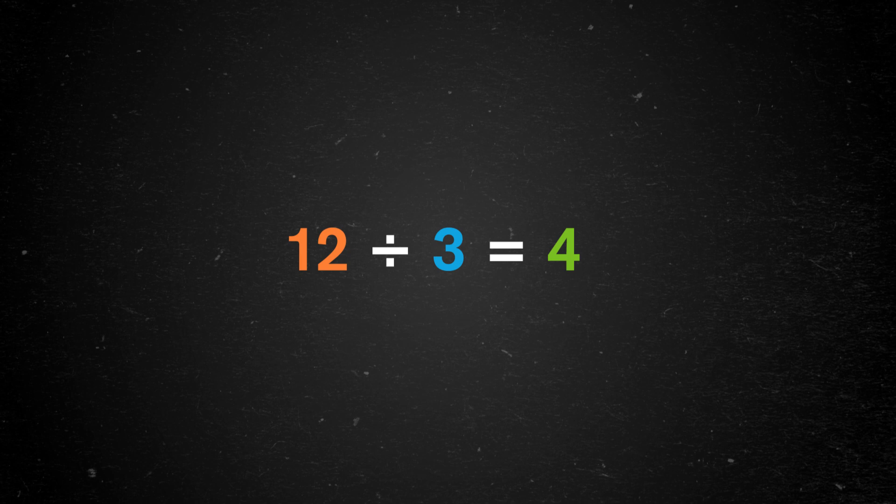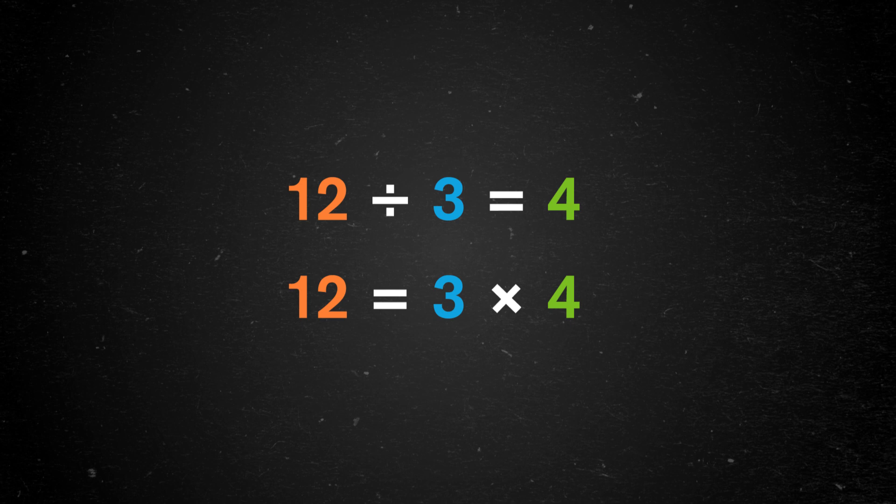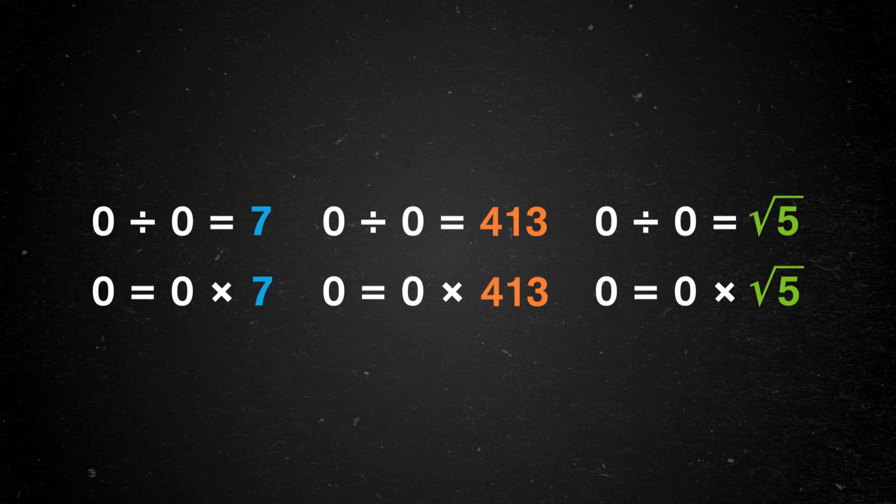Now we know 12 divided by 3 equals 4 is true, because we can reverse it. 3 times 4 is 12. We can multiply to get back to where we started. But that's not possible with something divided by 0. Since we don't know the answer, let's just say 12 divided by 0 is n. When we try to work backwards, we'll always get 0 times n is 0, not 12, no matter what n we choose. But maybe there's an exception. Brahmagupta thought that 0 divided by 0 must be equal to 0. And in a sense, he's not wrong. 0 times 0 does get you back to 0. The problem is that 0 times anything gets us back to 0. So we could just as well say that 0 divided by 0 is 7, or 413, or the square root of 5. It's the same problem we had with 0 to the 0th power. 0 divided by 0 could be any number, and that means we have to call it undefined.